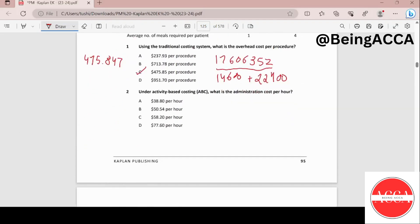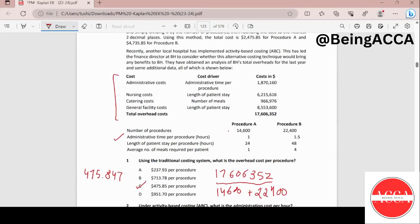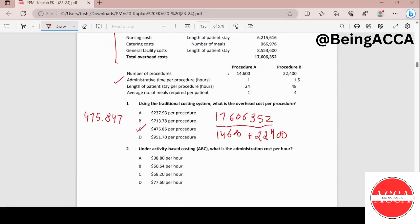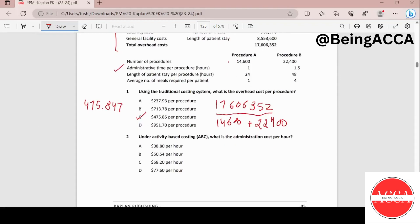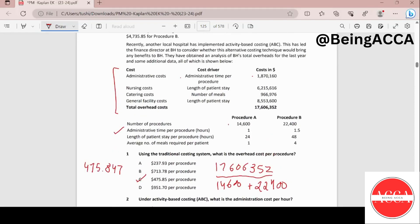Moving on, under activity-based costing, what will be the administration cost per hour? Now we have to see that these are the administrative costs in total and the cost driver that is behind it is administrative time per procedure. In procedure A, one hour is taken and in procedure B, 1.5 hours is taken. So let's first find out the total number of hours that have been taken to perform this job, the total administration work.